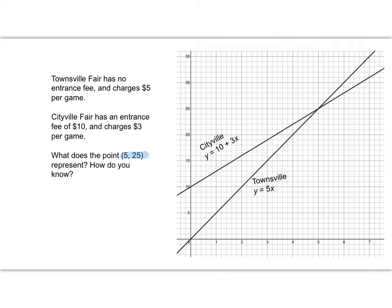Well, let's go find the point 5, 25. Let's see. Here's 5 on my x-axis. Here's 25 on my y-axis. So that would be this point right here. This is 5, 25. This is my point of intersection. Now it would have helped if I had labeled my axes. So let me go ahead and do that. My x-axis represents games and my y-axis represents dollars.